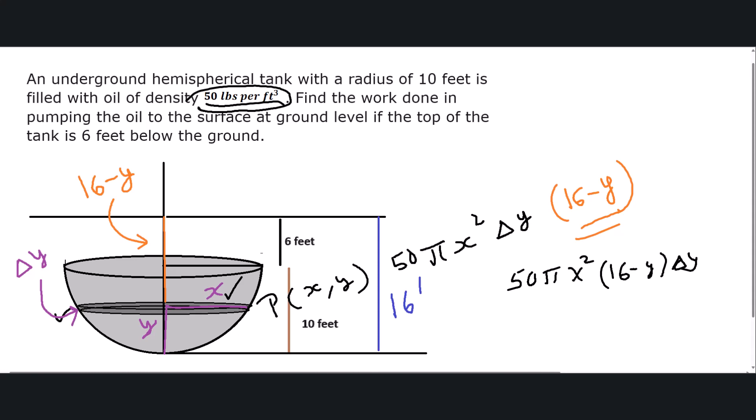Notice another thing. This is the center of the hemispherical slice. This radius is given to be 10 feet, and this is y. So this whole thing is 10, and this much is y. So this leg of this right triangle is 10 minus y.